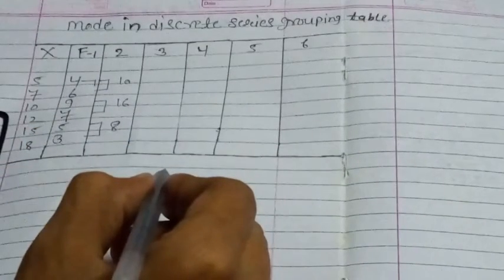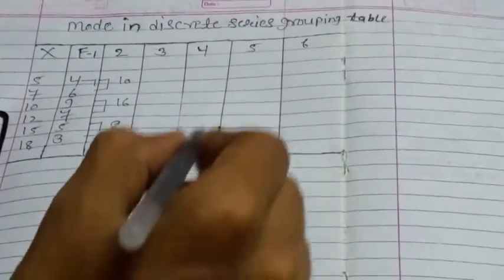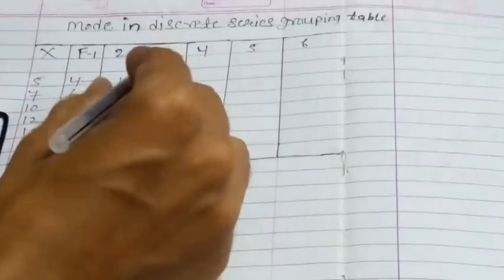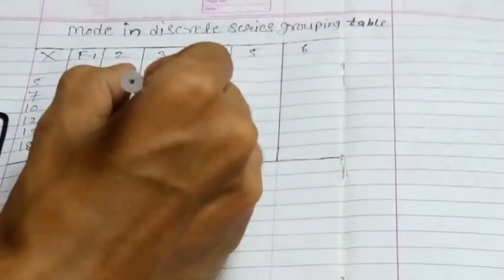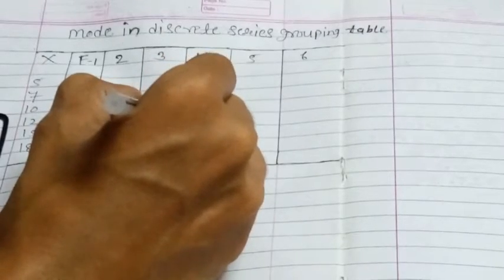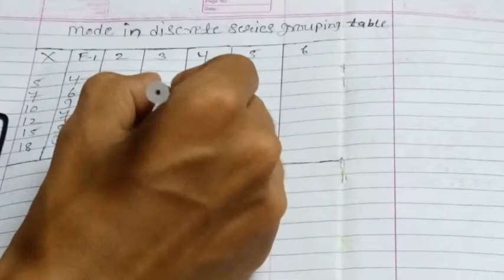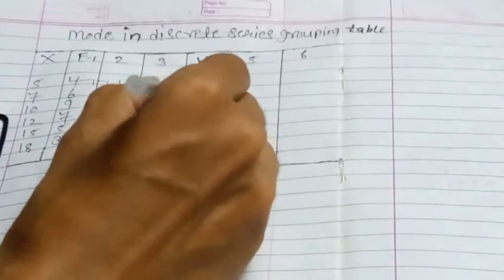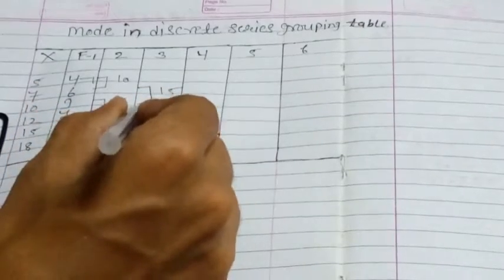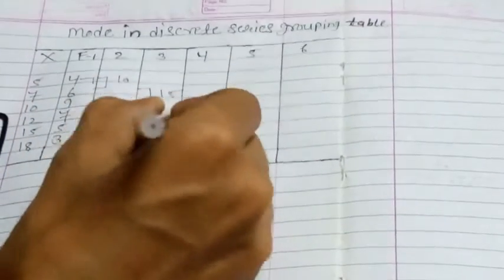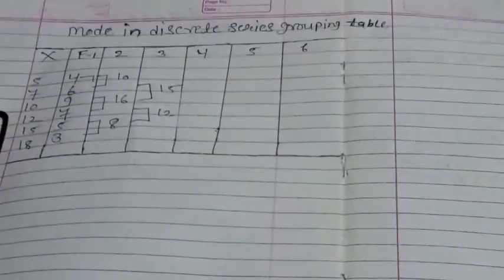In the 3rd column, leave the top figure and add 2 figures. So leave the 4, add 6 and 9 to get 15; then 7 and 5 gives 12.